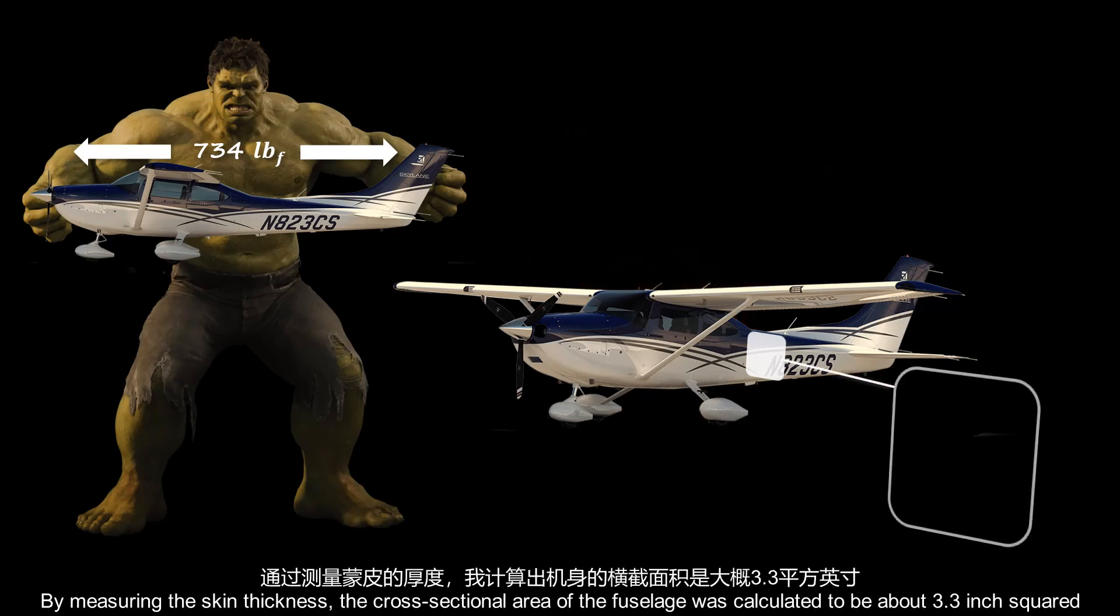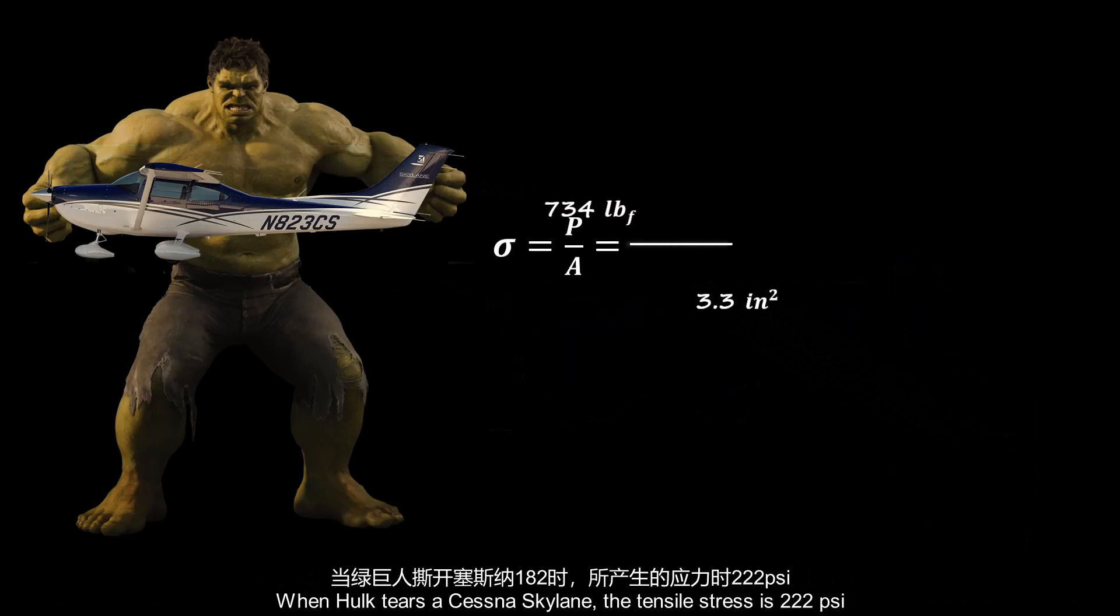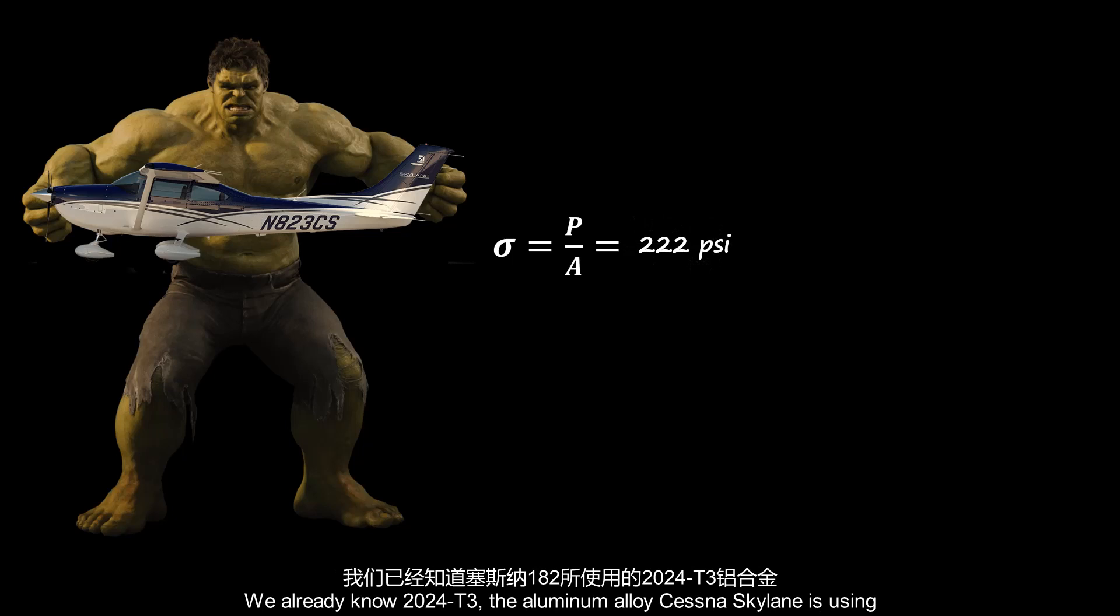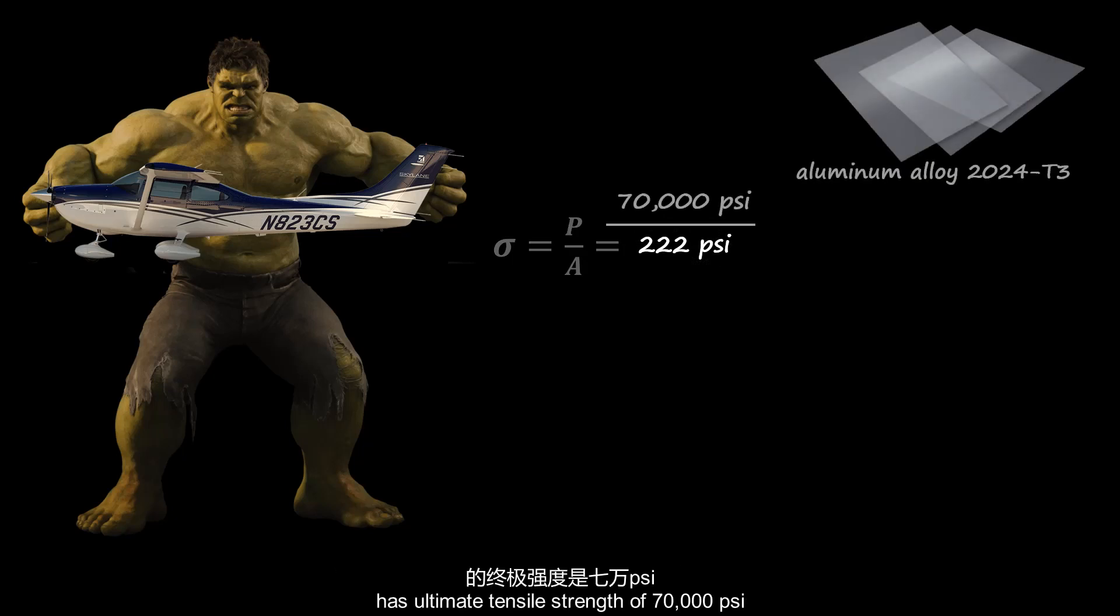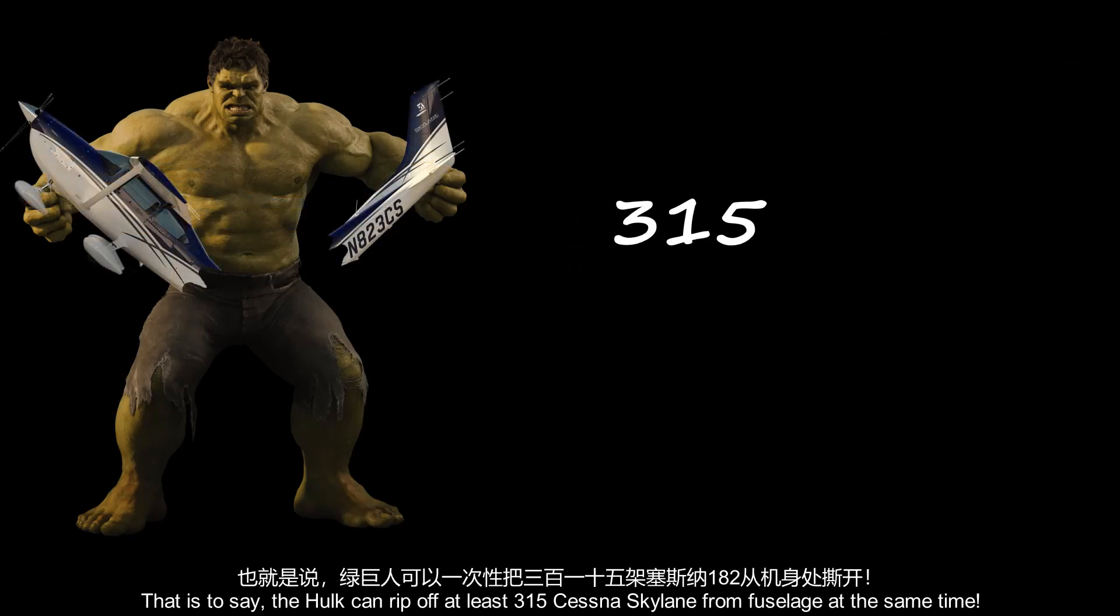By measuring the skin thickness, the cross-sectional area of the fuselage was calculated to be about 3.3 inches squared. This is not very accurate, but it should give you an idea. When Hulk tears a Cessna Skylane, the tensile stress is 222 psi. We already know 2024-T3, the aluminum alloy Cessna Skylane is using, has ultimate tensile strength of 70,000 psi. That is to say, the Hulk can rip off at least 315 Cessna Skylanes from the fuselage at the same time.